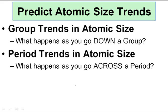The focus of today is going to be looking at atomic size and determining what happens in a group — groups are vertical — what happens to my electron cloud as I go down a column: does it get larger or smaller? And the same way, what happens when I go left and right on the periodic table? That's called the period trend. Periods go left and right, so what happens to the size of my electron cloud going left-right and also up-down?